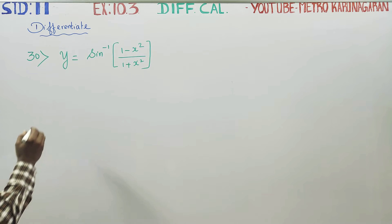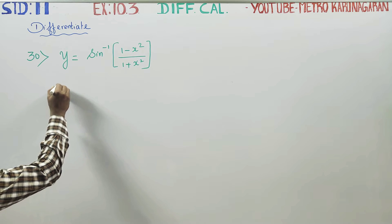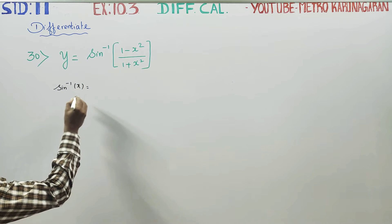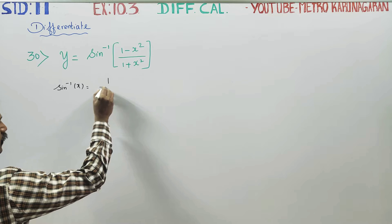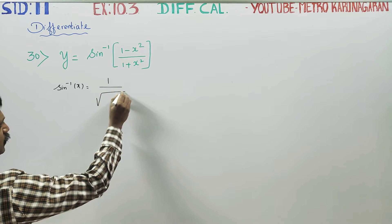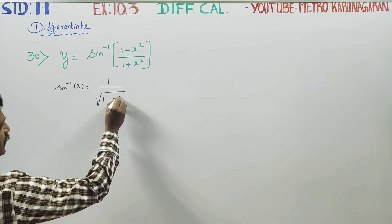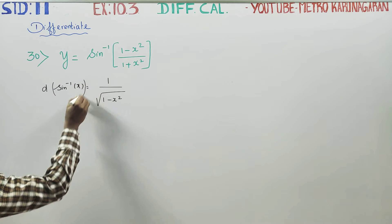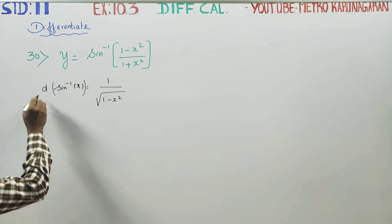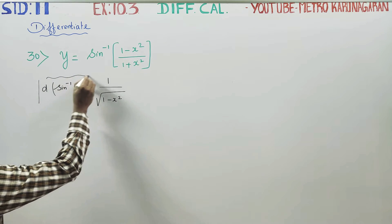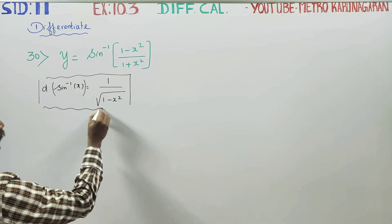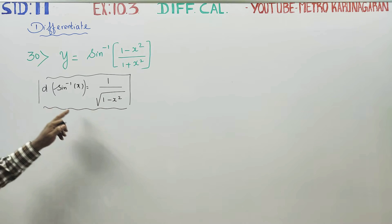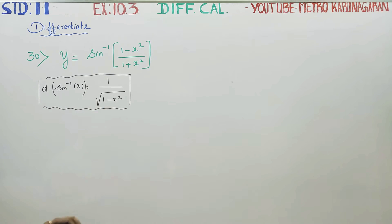Before entering into the sum, let us recall the formula. The formula for sin inverse x differentiation is 1 by square root of (1 minus x square). With this formula, the sum is easier to solve.